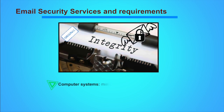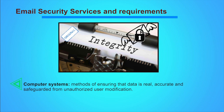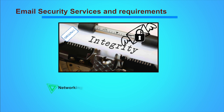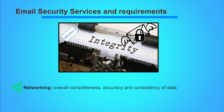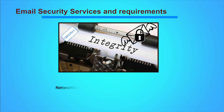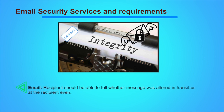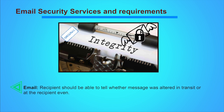Integrity in the context of computer systems refers to methods of ensuring that data is real, accurate and safeguarded from unauthorized user modification. Data integrity in the context of networking refers to the overall completeness, accuracy and consistency of the data, and must be imposed when sending data through a network. Integrity in email terms means that recipients should be able to tell whether a message was altered in transit or at the recipient side.